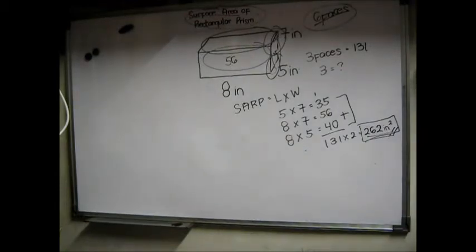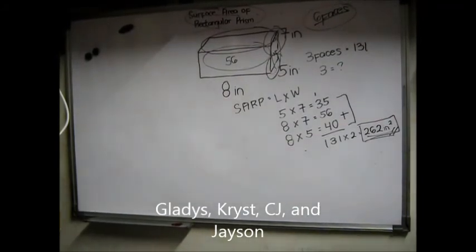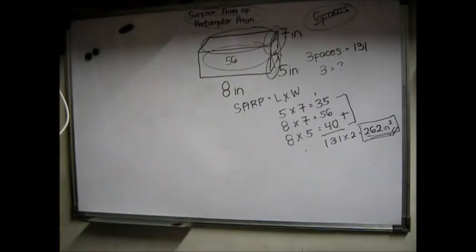So 131 multiplied by 2 equals 262. There you have it, the surface area for rectangular prism is 262 inches squared. Thank you for watching, hope you enjoyed it and I hope I helped you a lot. This is our special coverage or project in our mathematics subject together with my group mates Gladys Anadno, Chris John Palafkawaling, CJ Estrella, and Jason Herrero. Once again, thank you for watching. God bless.